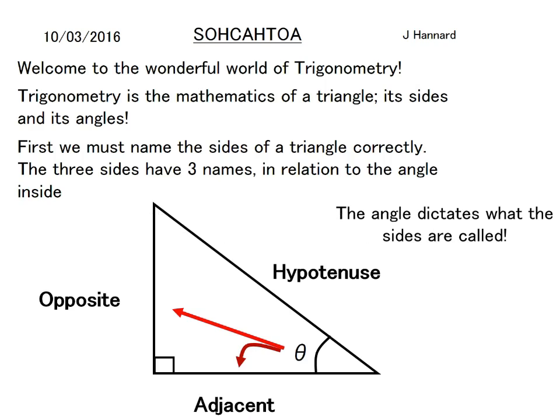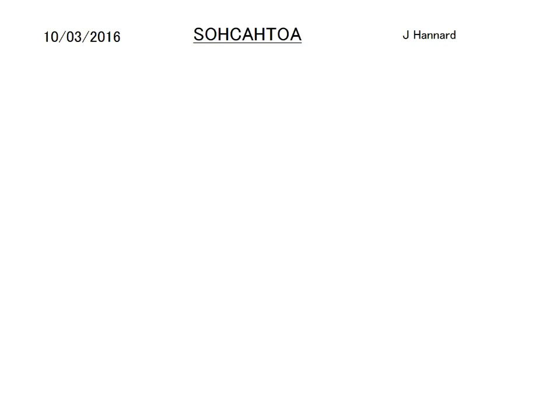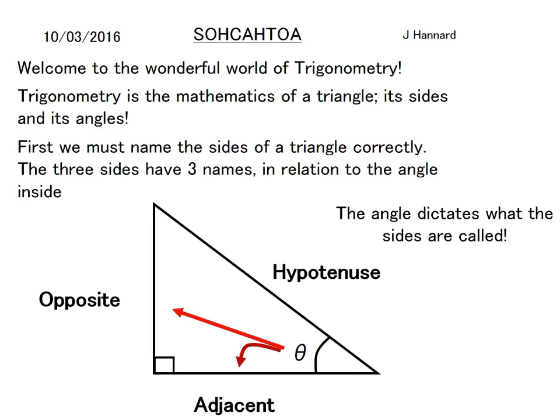The angle dictates what the sides are called. So for example, if theta was up here, then this would be the opposite here and this would be the adjacent. But you should already know that.